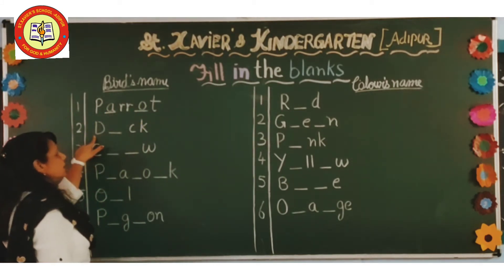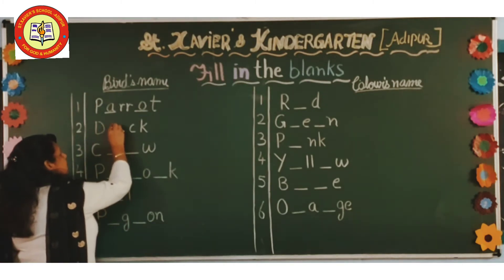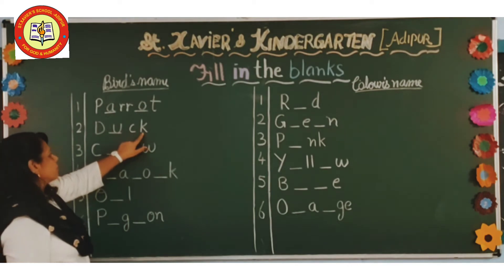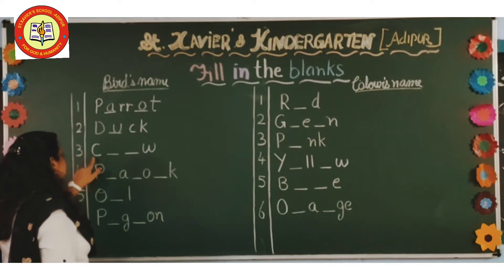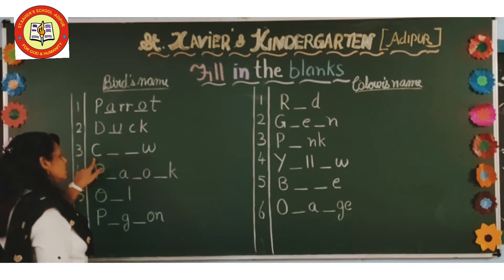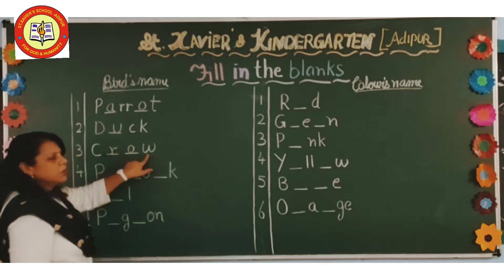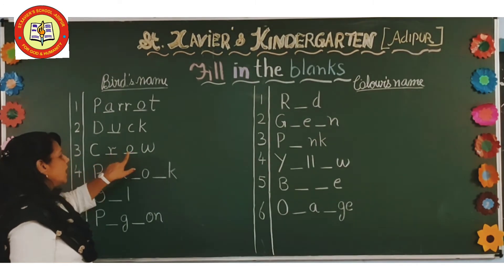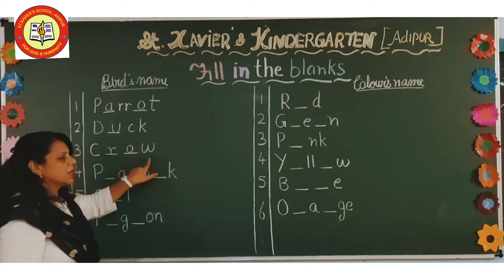Then second word, duck. D-U-C-K. So we have to fill here U. Then crow. C-R-O-W, crow. So we have to fill here R and O.